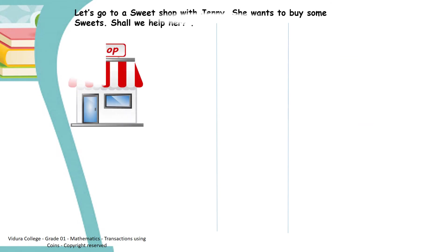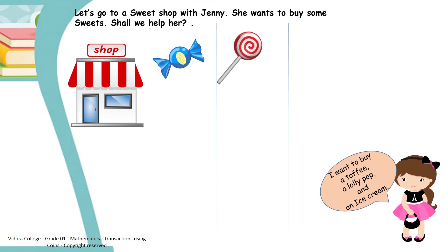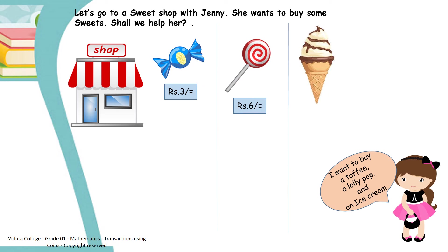Let's go to a sweet shop with Jenny. She wants to buy some sweets — shall we help her? This is Jenny. She wants to buy a toffee, a lollipop, and an ice cream. Let's see what the prices of these things are. A toffee is 3 rupees. A lollipop is 6 rupees. And an ice cream is 9 rupees.